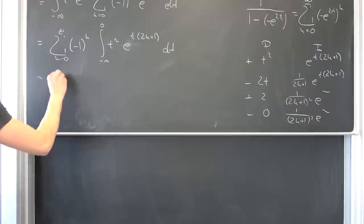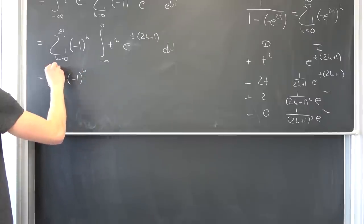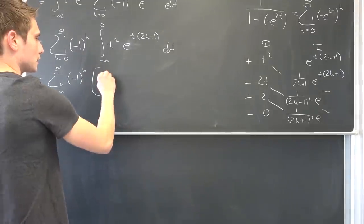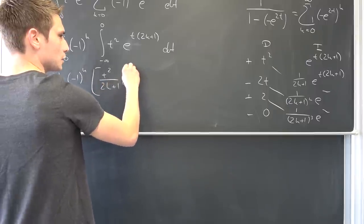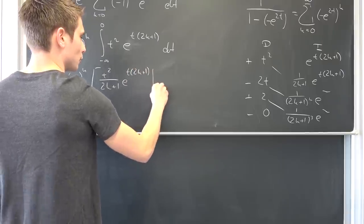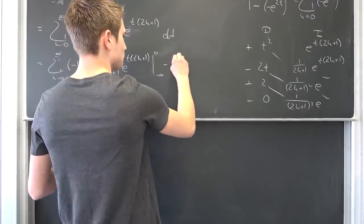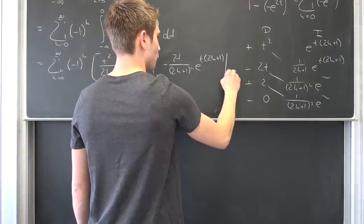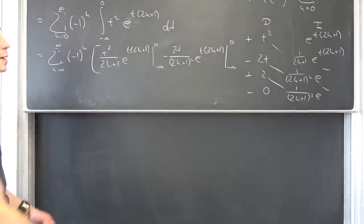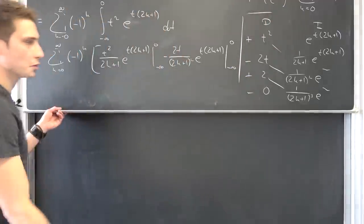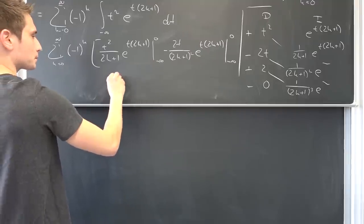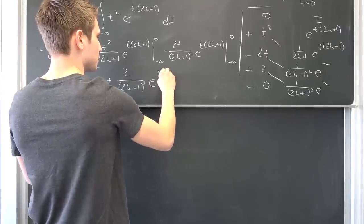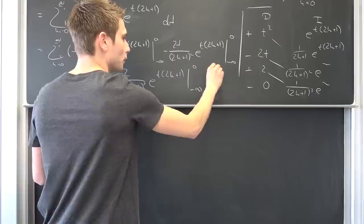Now we have an infinite sum, negative 1 to the kth power, k from 0 to infinity. Multiply this together, apply the upper and lower bounds, and then we are basically done. So we are going to get t squared over 2k plus 1, e to the t, 2k plus 1 from negative infinity to 0. Then we are going to get negative 2t over 2k plus 1 squared, e to the t, 2k plus 1 from negative infinity to 0. And also for the last part, plus 2 over 2k plus 1 to the third power, e to the t times 2k plus 1 from negative infinity to 0.